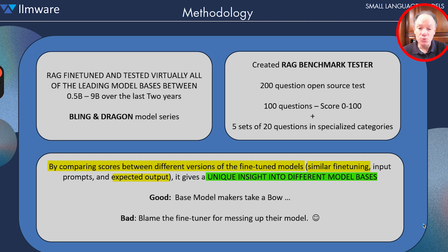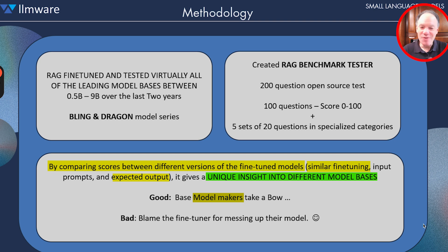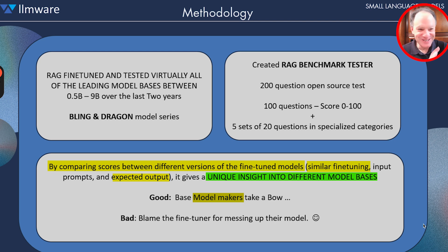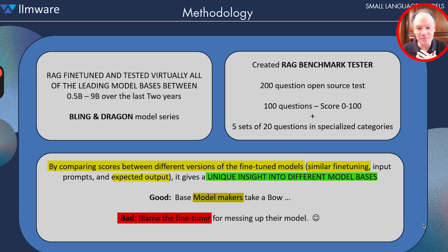Our rule is a really simple one, and it's completely one-sided in favor of the model maker. We think we live in incredible times when all of these model makers are putting so much IP out into the public domain. So anything that we say that is good, the base model maker should take credit for it — take a bow. It is a credit to their model. Anything bad or anything that even sounds bad, they are totally welcome to blame us as the fine-tuner for messing up the performance of their model.